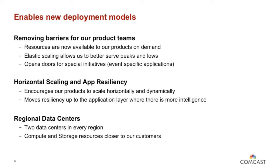OpenStack at Comcast enables new deployment models by removing barriers for our product teams — resources are now available on demand. Elastic scaling allows us to better serve peaks and lows and opens doors for special initiatives and event-specific applications, for example horizontal scaling. Resiliency encourages our products to scale horizontally and dynamically moves resiliency up to the application layer where there's more intelligence.